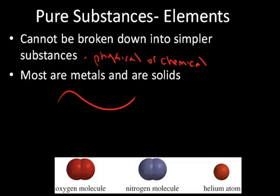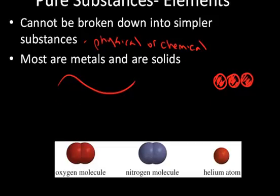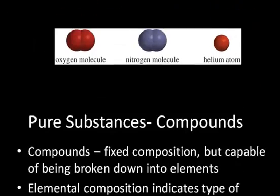On the periodic table, the majority of elements are metals and they exist as solids. We typically model them as single atoms of the same type existing in some sort of a crystalline array associated with the solid — all the same type of atoms, with the same number of protons.